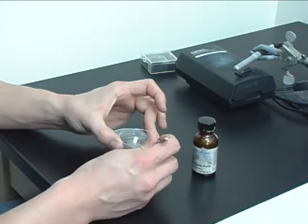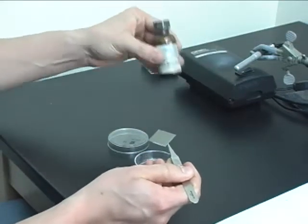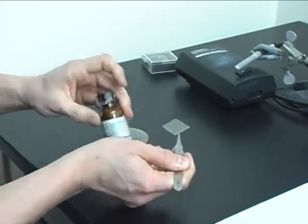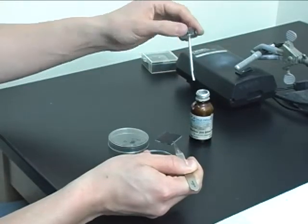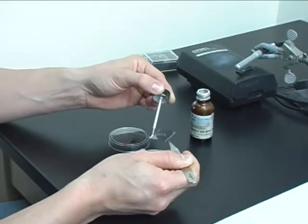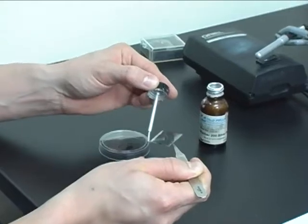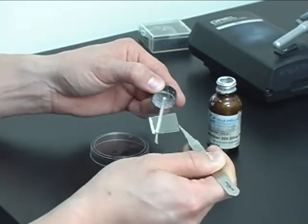And we're going to start off by painting silver paste onto the back side to make contact with our instrument. Just a little strip on the top. Make sure it goes over the sides and onto the bottom.